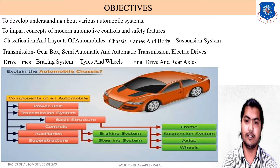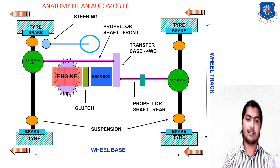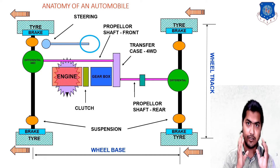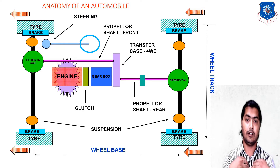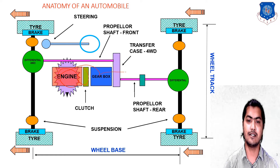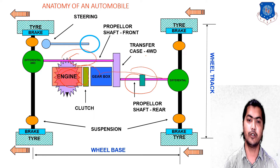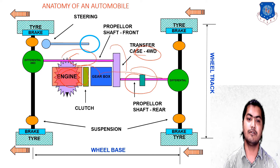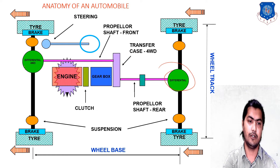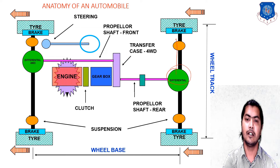This layout diagram shows a four-wheel drive system. Engine power is transmitted to the gearbox via the clutch, then from the gearbox to the differential via the propeller shaft. Because this is a four-wheel drive, two propeller shafts are used. A transfer case is used in between to distribute power to both the rear wheel drive and front wheel drive.